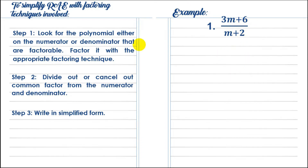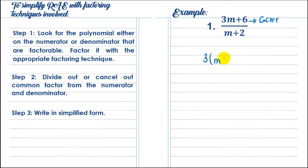We have 3m plus 6, which is factorable by GCMF. The GCMF of 3m and 6 is 3. Factor it out: 3m divided by 3 gives m, and positive 6 divided by 3 gives positive 2. Then we rewrite the denominator — since there is no applicable factoring technique for the denominator, we have m plus 2.